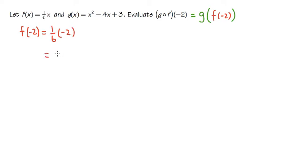Well, 1 over 6 times negative 2 is the same as negative 2 over 6. And we can reduce this, divide the top by 2, divide the bottom by 2. So we have negative 1 over 3.